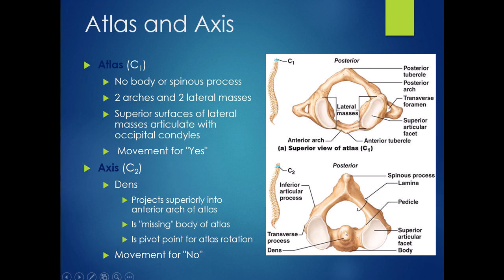The C2 vertebra is known as the axis, largely because of the dens — a projection that projects into the atlas and almost acts like the missing body of the atlas. It is a pivot point. The atlas rotates around the dens on the axis so that you can shake your head no. Since it's rotating on the axis, it's called the axis vertebra. So C1 is the atlas, C2 is the axis — very different vertebrae compared to all the others.